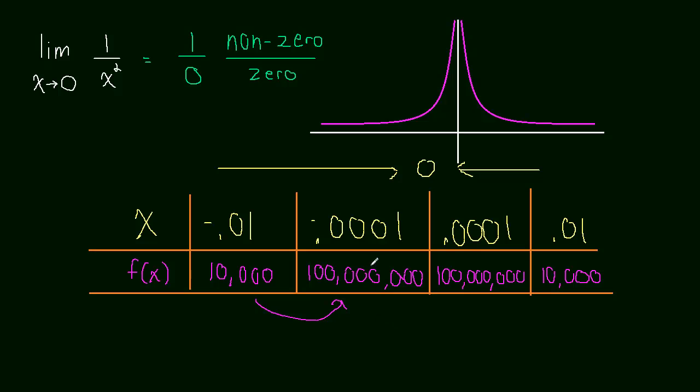And if more zeros in, meaning point zero zero zero zero zero one, if we looked at this number, the x value, the f of x value is going to be huge.